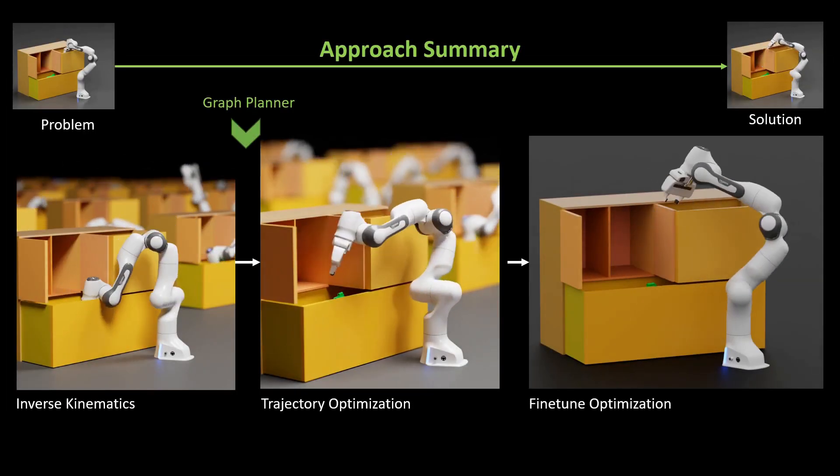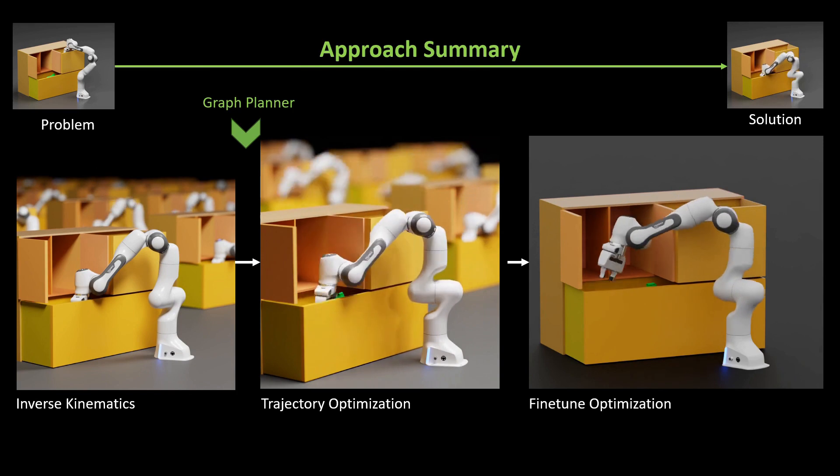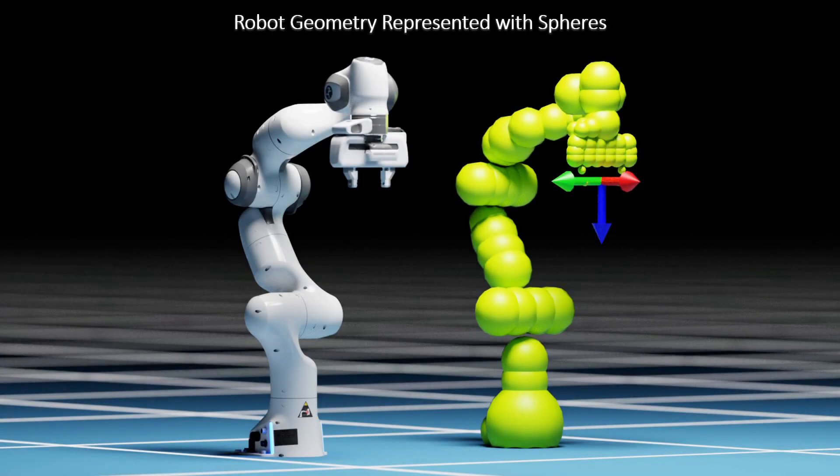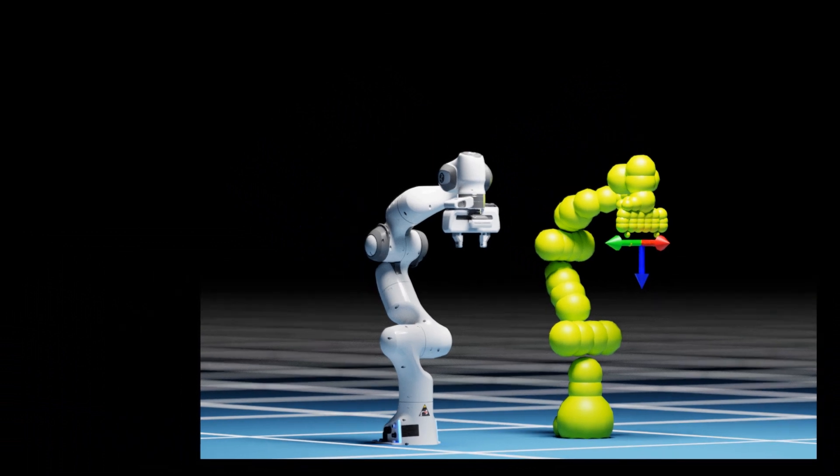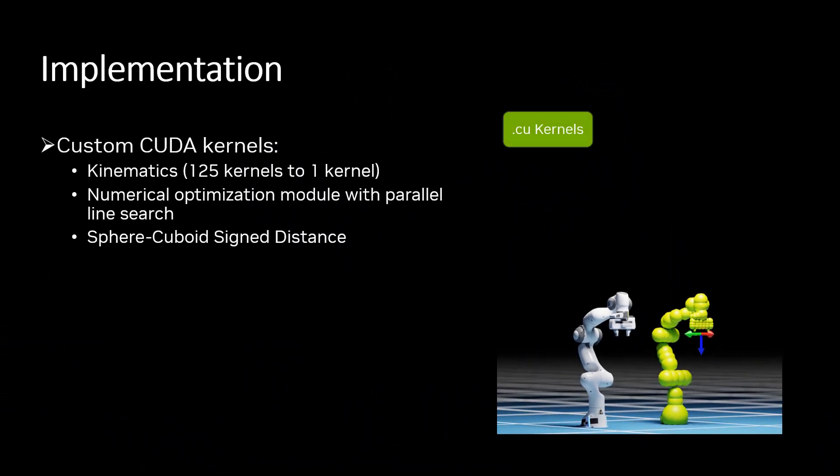Putting these parts together, we get the full motion generation pipeline in Kurobo. Now let's look at the implementation. To run the computation steps for motion generation efficiently, Kurobo represents the robot's geometry with spheres, and the kinematics function then maps a joint configuration to the position of the spheres and the pose of the end effector. Kinematics, along with several other core computational blocks, are implemented as custom CUDA kernels. The kernel for robot kinematics reduces work previously run by 125 kernels to one CUDA kernel. Numerical optimization solvers, including LBFGS and parallel line search schemes are also implemented with custom CUDA kernels. A sphere cuboid signed distance function is implemented in CUDA for use in computing collision avoidance terms in optimization.